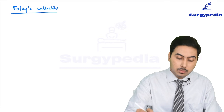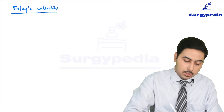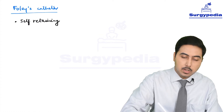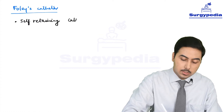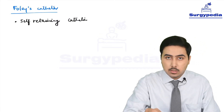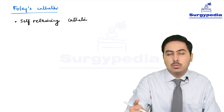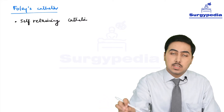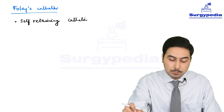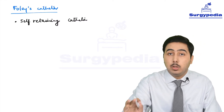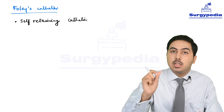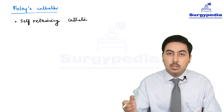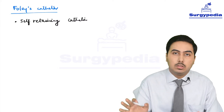Know a few things about Foley's catheter. Number one: it is a self-retaining catheter. The difference between a simple rubber catheter and a Foley's catheter is that a simple rubber catheter will come out — you insert it, the urine comes out, and then you remove it. Even if you leave it in situ, it will come out because it has no self-retaining mechanism. But Foley's catheter has a balloon which we inflate after insertion, and that balloon keeps the catheter in place — you just can't pull it out. You need to deflate the balloon first.